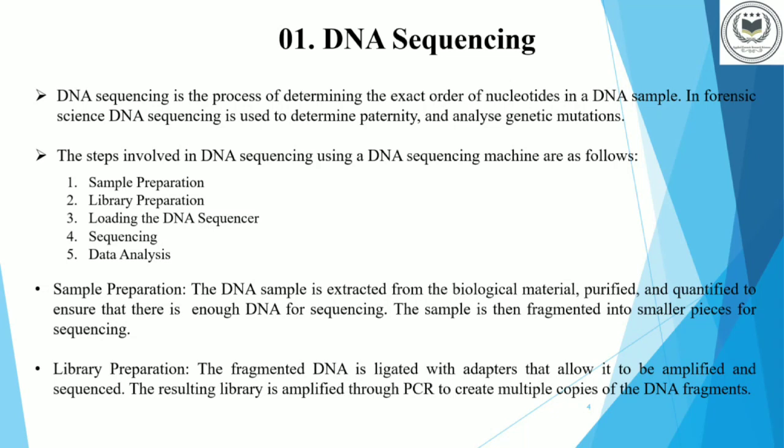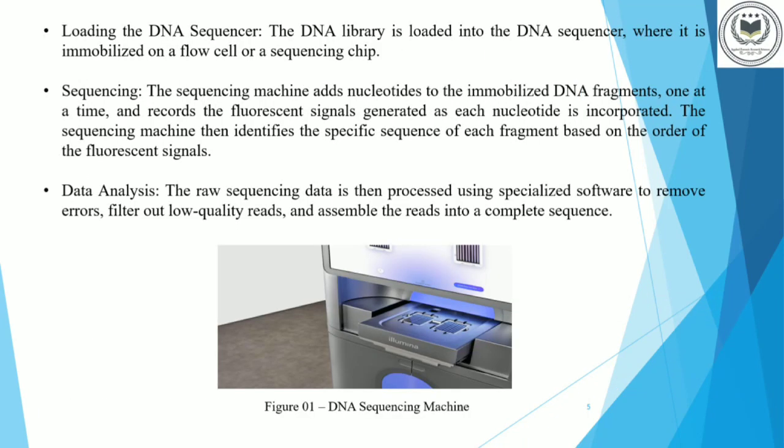Each DNA fragment is mixed with primers, DNA polymerase, and nucleotides. These nucleotides are labeled with fluorescent tags. Next, the DNA library is loaded into the DNA sequencer. After the sequencing steps, we can analyze data that is used to determine paternity.